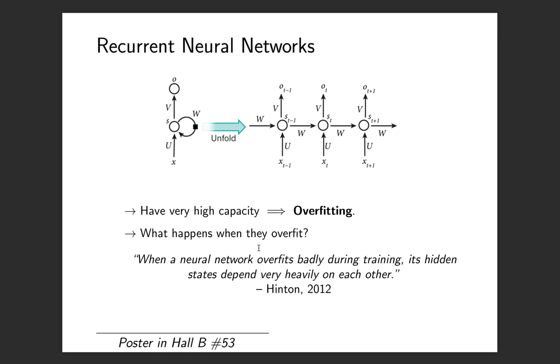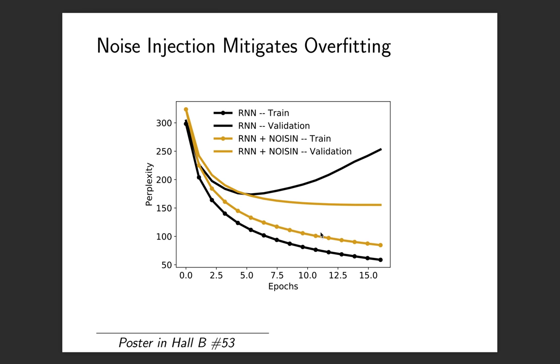The problem is that RNNs have very high capacity and they memorize data very easily. We say they overfit. But fortunately, we have some intuition on what happens when they do overfit. What happens is that the hidden states depend very heavily on each other. They co-adapt. One natural way to mitigate overfitting is to inject noise into the hidden states of the RNNs.